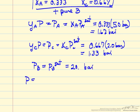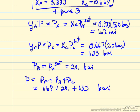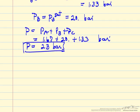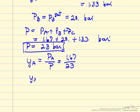The total pressure in the system is the partial pressure of A plus the partial pressure of B plus the partial pressure of C: 1.67 plus 20 plus 1.33, giving a total pressure of 23 bar. The mole fraction of A in the vapor phase is 1.67 over 23, the mole fraction of B is 20 over 23, and the mole fraction of C is 1.33 over 23.